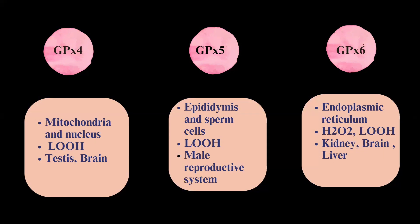Glutathione peroxidase 5 is located in epididymis and sperm cells. Its substrate specificity is lipid hydroperoxide, and its tissue distribution is in the male reproductive system. It functions to protect spermatozoa from oxidative damage. Glutathione peroxidase 6 is located in the endoplasmic reticulum, with substrate specificities of hydrogen peroxide and lipid hydroperoxide, distributed in the kidney, brain, and liver, functioning to protect the olfactory and auditory systems from oxidative damage.